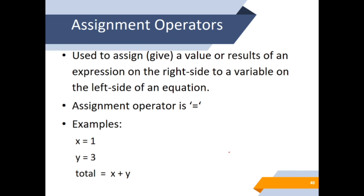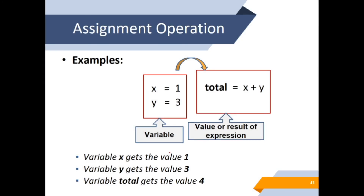The last one is the assignment operator. It is used to assign a value or result of an expression on the right side to a variable on the left side of an equation. The assignment operator is the equal sign. For example: x = 1, y = 3, and total = x + y. So 1 plus 3 is 4, and 4 is assigned to the variable total.